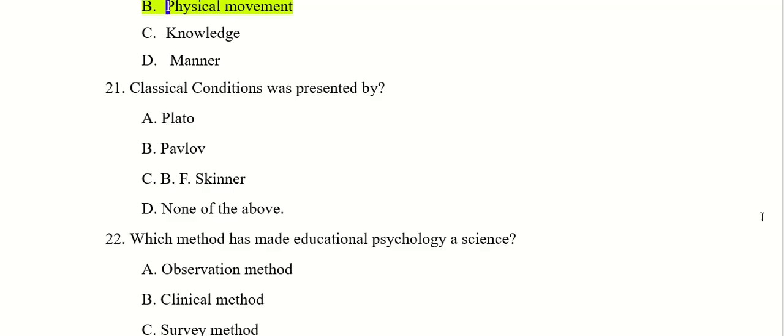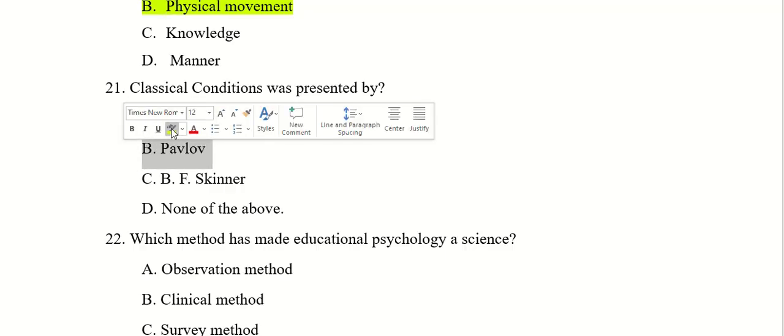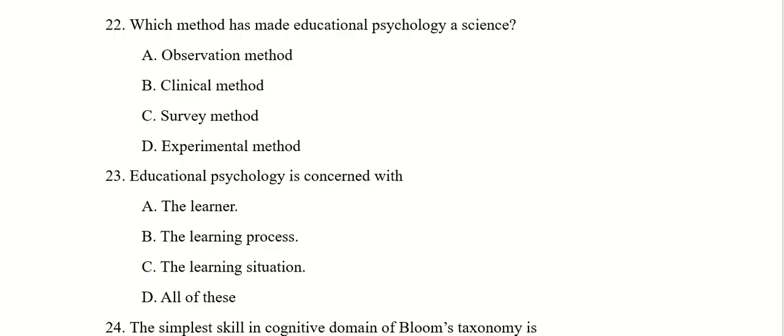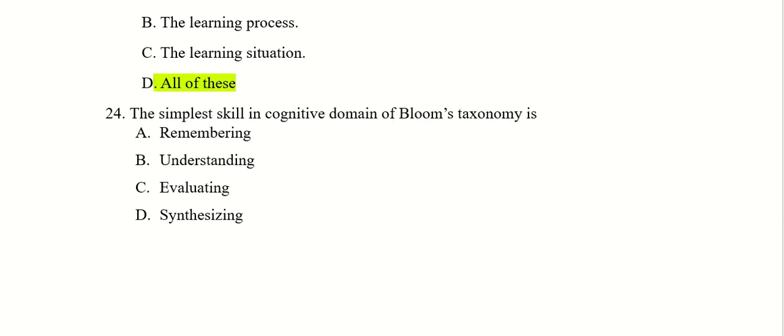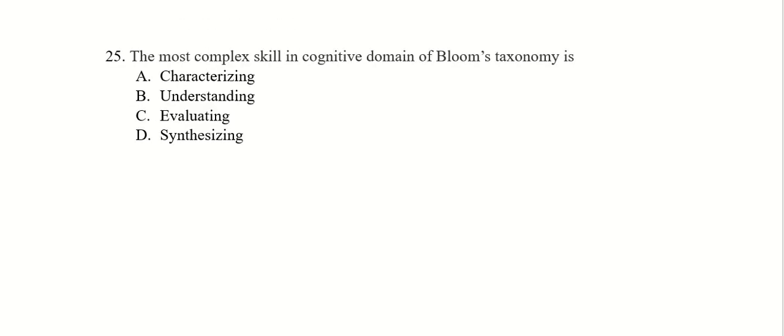Classical conditioning was presented by Plato, Pavlov, B.F. Skinner or Thorndike. Right answer is B, Pavlov. Which method has made educational psychology a science: observational method, clinical method, survey method or experimental method. Right answer is experimental method. The highest level in old Bloom's taxonomy is evaluating.